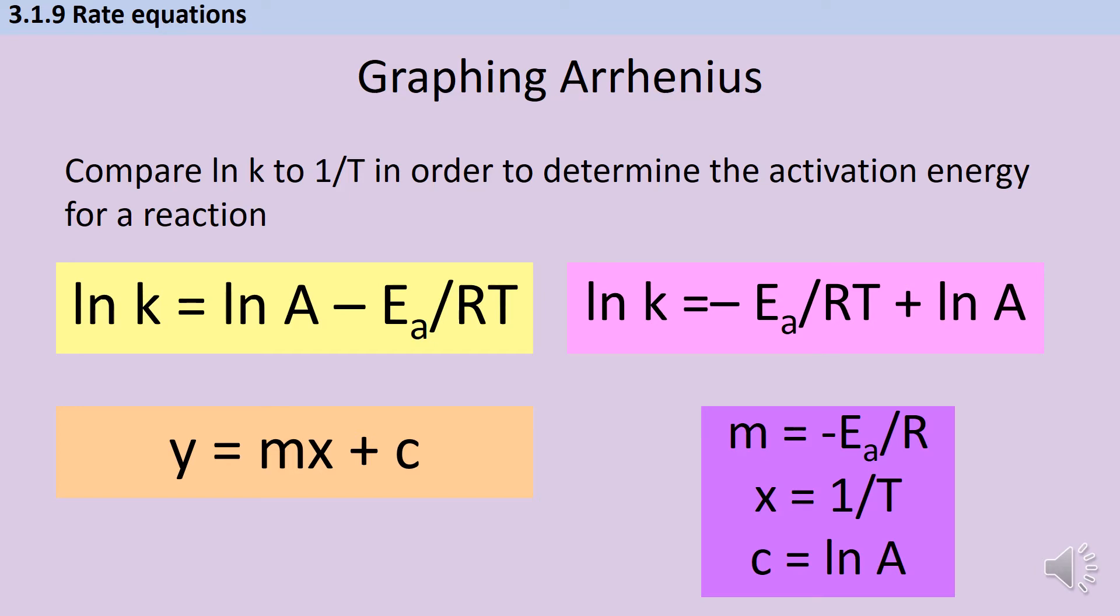So what we're going to have is a graph in which we've got 1 over T on the x-axis, natural log of k on the y-axis, and the gradient is going to be the negative activation energy divided by R, divided by 8.314.